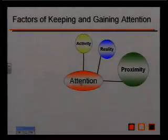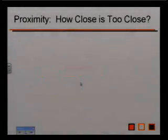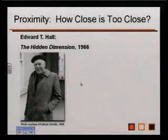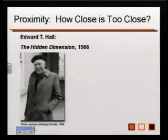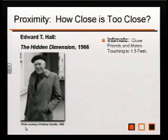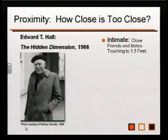Let's transition to our next factor: proximity. How close is too close? Edward T. Hall, in 1966, wrote a book called The Hidden Dimension — an excellent example of nonverbal communication and one of the forerunners of that study. He talked about the difference between intimate — which happens between close friends and mates, from touching up to 1.5 feet. If you've studied Aikido or any martial arts, you know that everything up to the reach of your hand is considered your personal space.